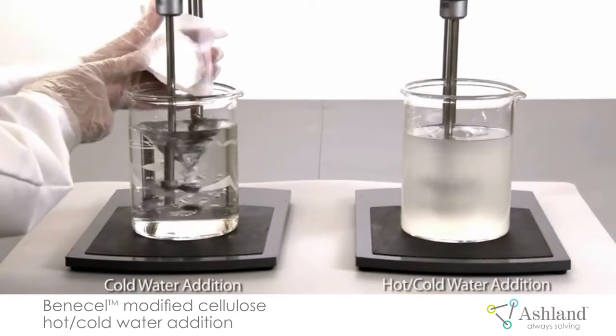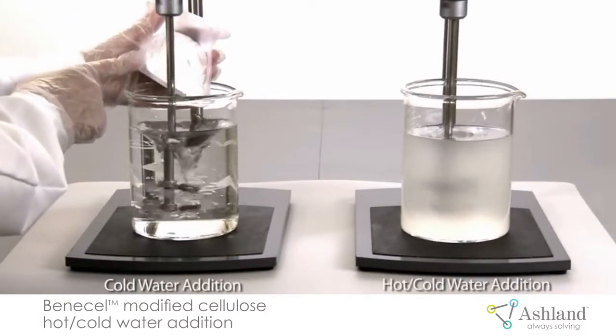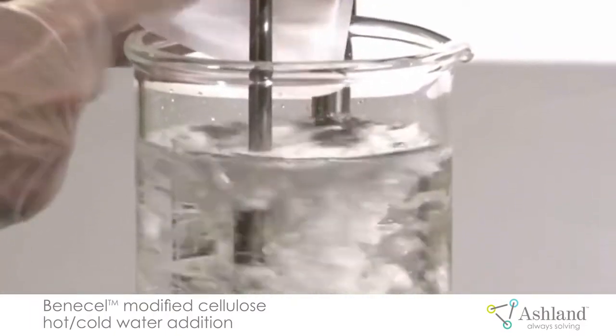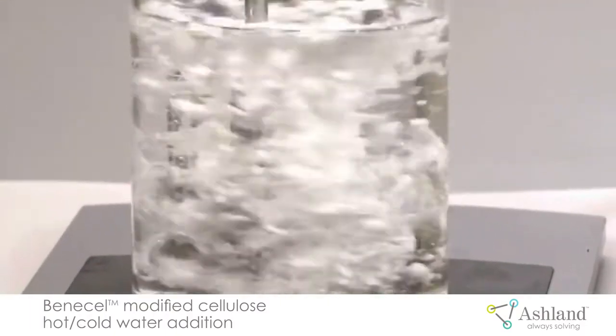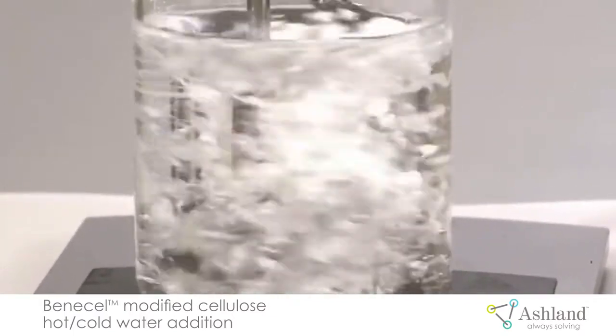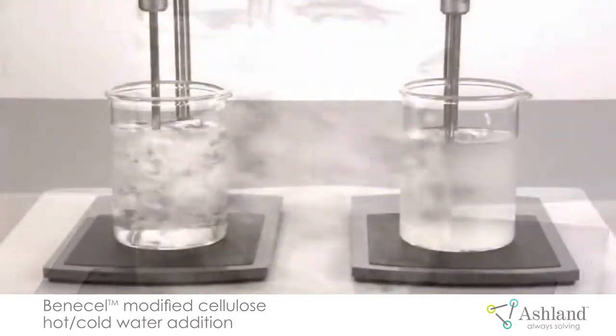Now we will show the difference in how Benecel modified cellulose disperses when added to water that hasn't been heated. As you can see, because the Benecel modified cellulose is not very hygroscopic, it quickly forms lumps on the surface of the water.